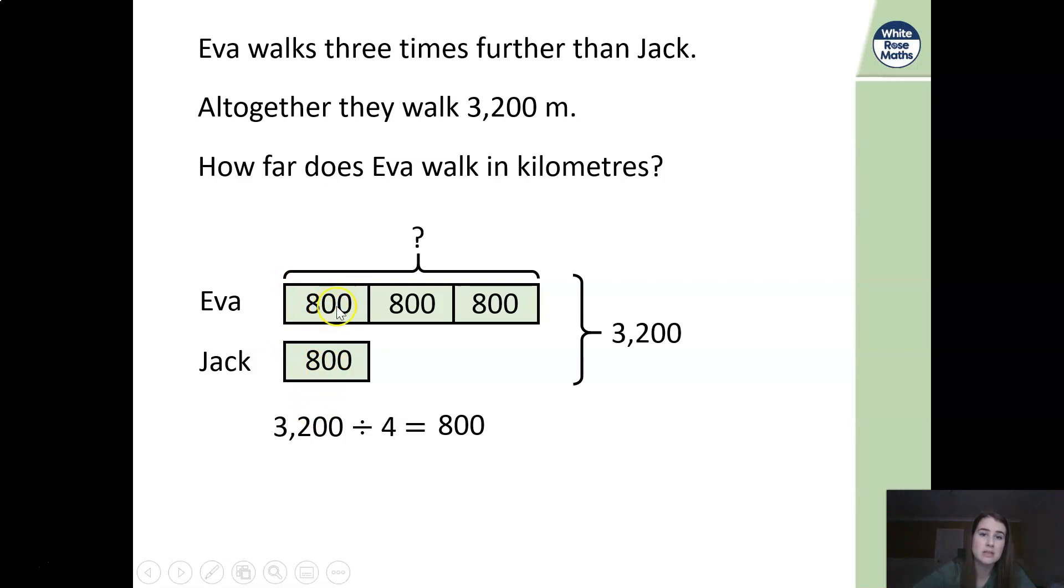We know that they've walked a total of 3,200. So they both walked 800 meters to start off with. The question says how far does Eva walk in kilometers. So we need to work out what Eva's walked in total. So three times 800 is going to give us 2,400. If we then added the 800 on there which is how far Jack walked we'd get the total of 3,200. So it's important that although yes it was three times further we had to divide by four because you can't forget that Jack walked that same distance as well. So always do a bar model because it will help you.